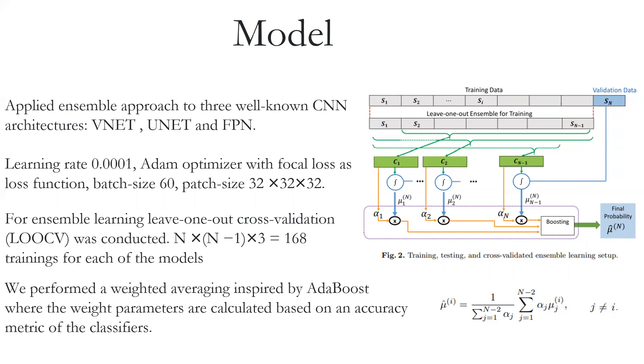The hyperparameters of all networks were the same: learning rate 0.0001, Adam optimizer with focal loss as the loss function, batch size 16, and patch size 32×32×32 for 3D images.